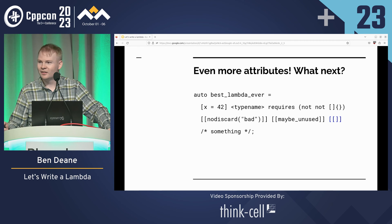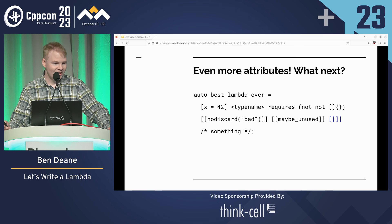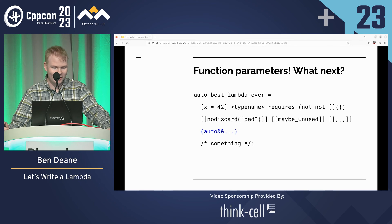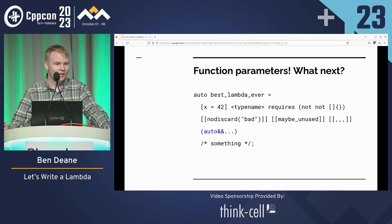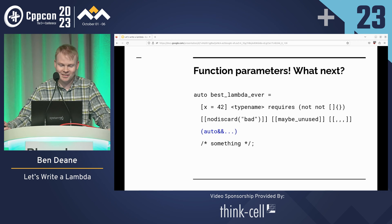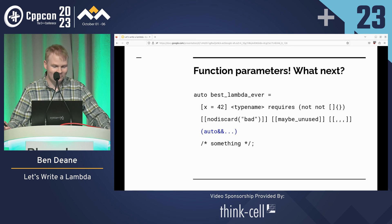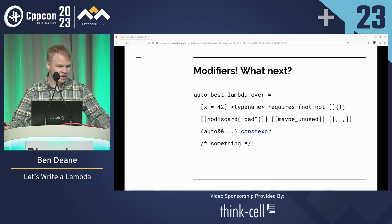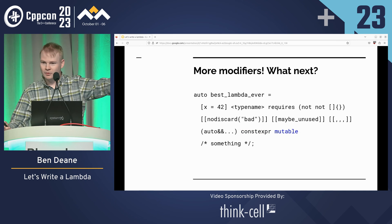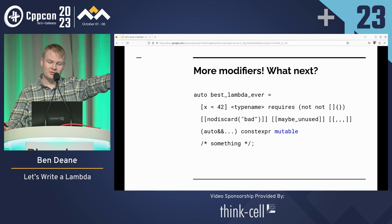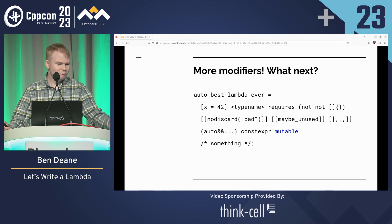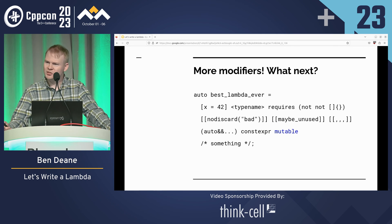What comes next? We're not at noexcept yet. Next is actually the arguments — finally, all the parameters. What comes next? Constexpr — it's implicit, but we can put it there. And mutable — constexpr mutable is fine. We can also have consteval there instead of constexpr, or static instead of mutable from C++23. I think I've seen Jason do constexpr mutable in a talk.